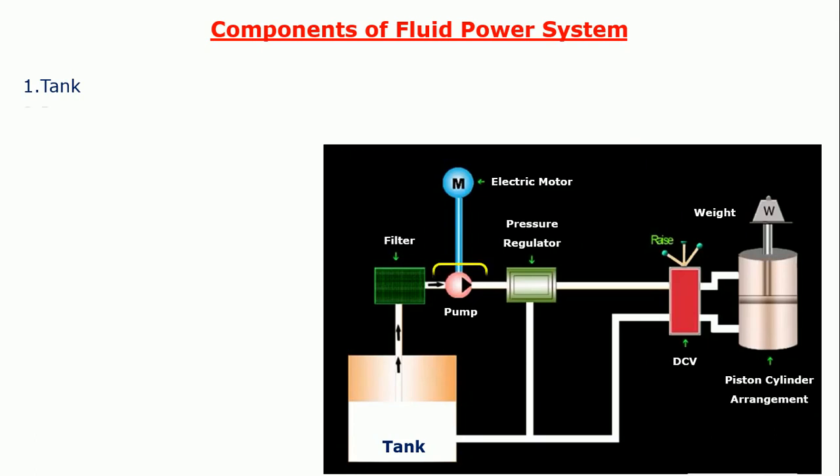Second one is pump. It is used to pump the hydraulic oil from the reservoir to the cylinder. It means the function of pump is to circulate the hydraulic oil from one point to other points of fluid power system. Third one is motor. Motor is used for driving the pump, so that we will get required fluid pressure.